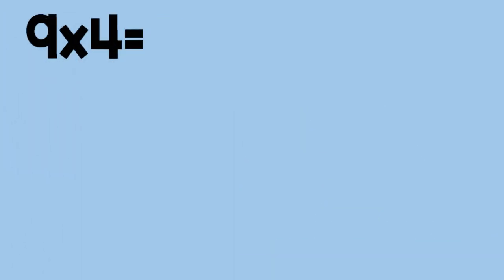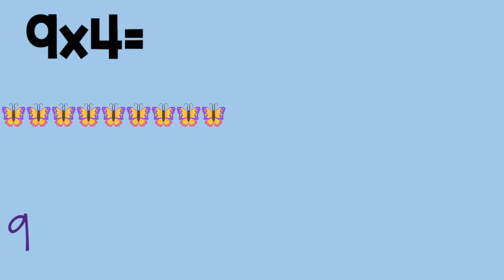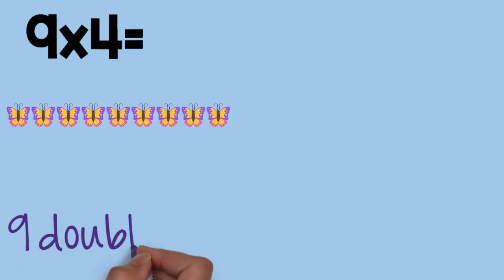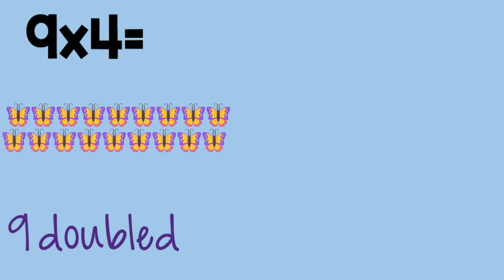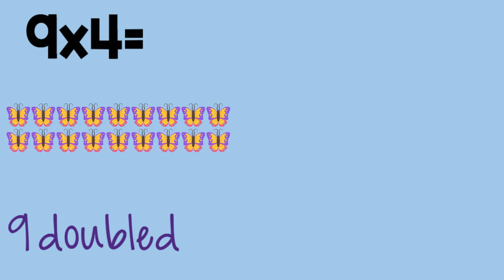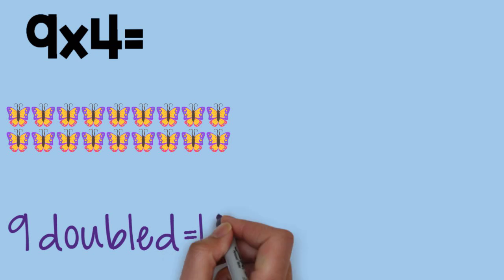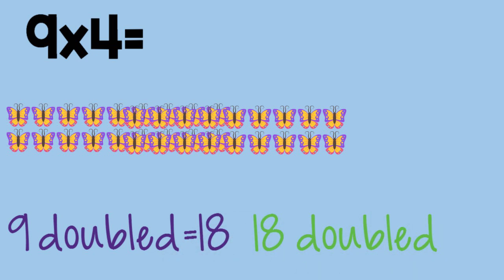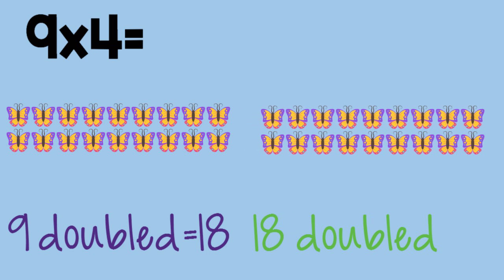Nine times four. Nine, doubled, is eighteen. Eighteen, doubled, is thirty-six. Nine times four equals thirty-six.